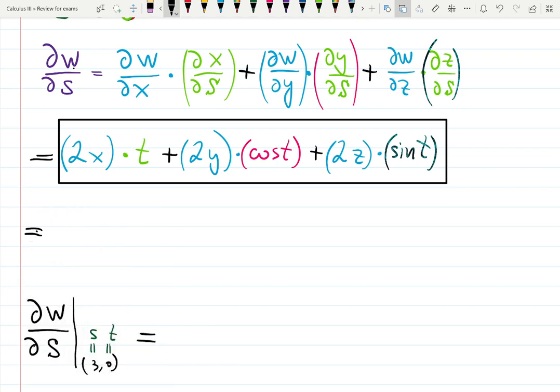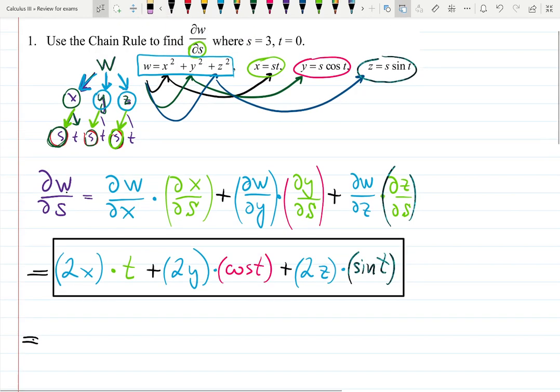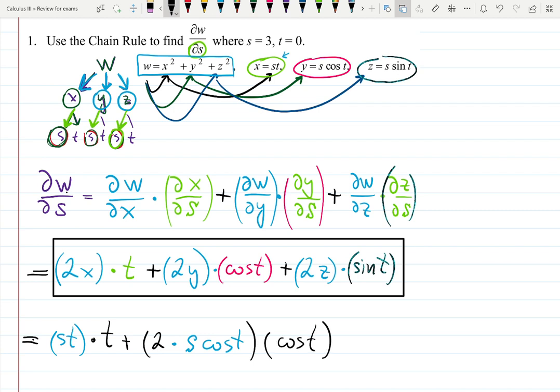So before plugging in, apparently I need to have the final answer with respect to only the two last variables S and T. That is why instead of all the blue colored functions I need to actually go back to whatever they mean. X as you see from here is S times T, times T, plus 2Y. Y is S cosine T, so it will be 2 and then Y will be changed into S cosine T times cosine T was there originally so I just copy it. It was in pink - 2Z. Z is S sine T, is S sine T, and then sine T was there so I'm copying it as well.